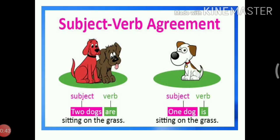Let us see some examples. Two dogs are sitting on the grass. Two dogs — plural subject; are — plural verb. The subject and verb agree with one another in this sentence. One dog is sitting on the grass. One dog — singular subject; is — singular verb. Singular subject and singular verb agree with one another in this sentence. If a subject is singular, its verb must be singular. If a subject is plural, its verb must be plural.